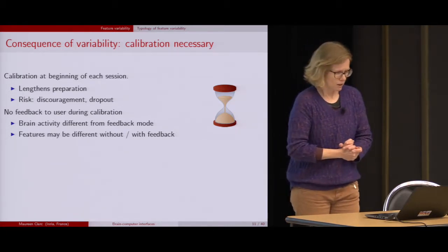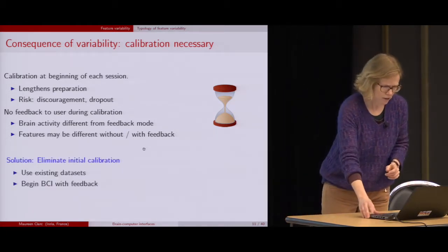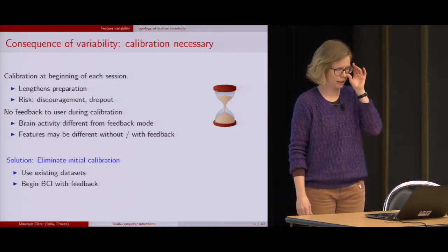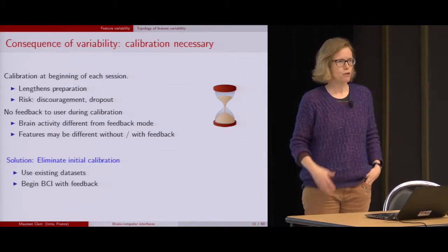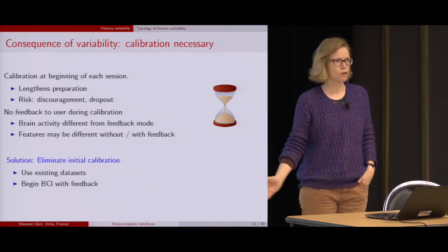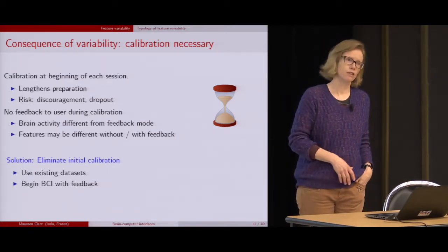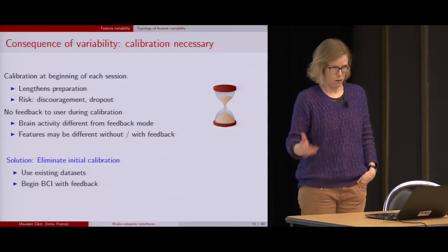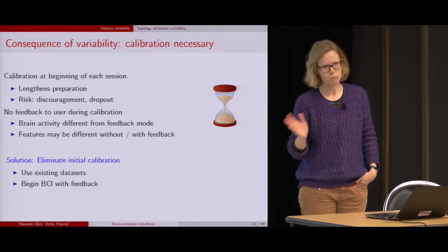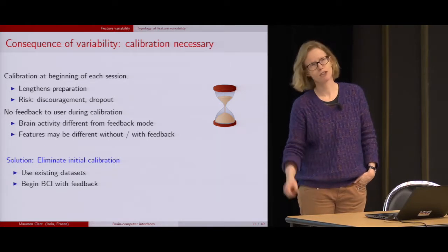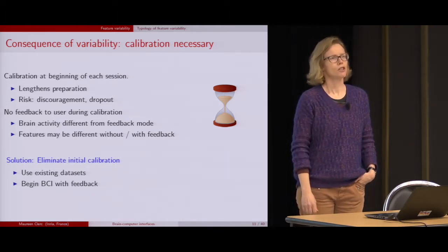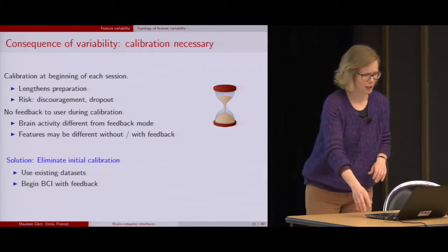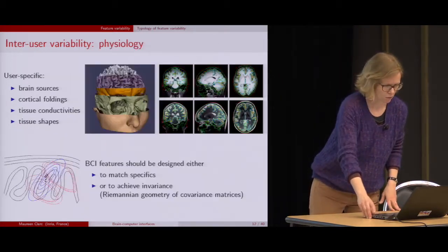Their brain activity might be totally different from what it would be if they were actually doing the real brain-computer interface. The solution is to eliminate this initial calibration — get rid of it. For this, use existing datasets, and even if they don't correspond to the subject, we'll find ways to get around that. Begin the BCI with feedback. Even if it's not perfect, begin with feedback.